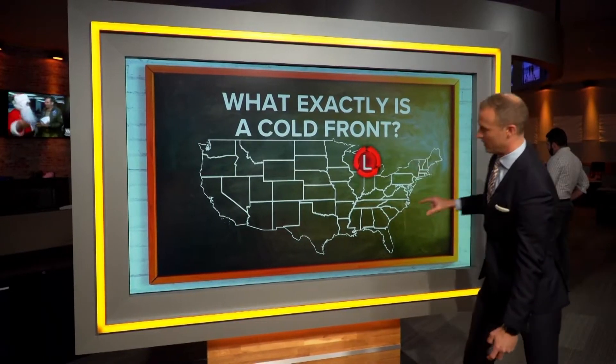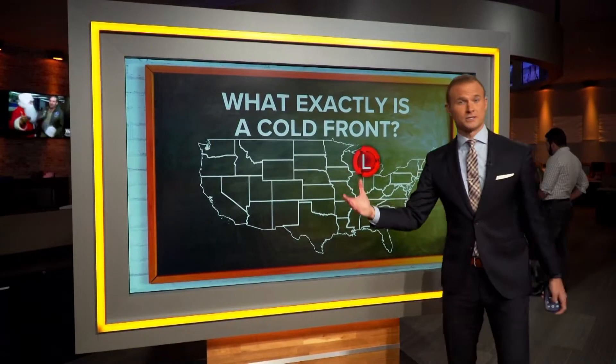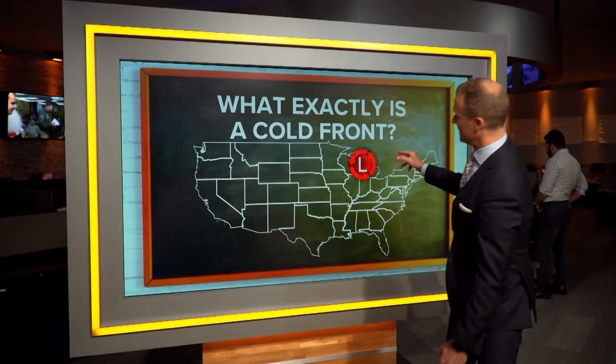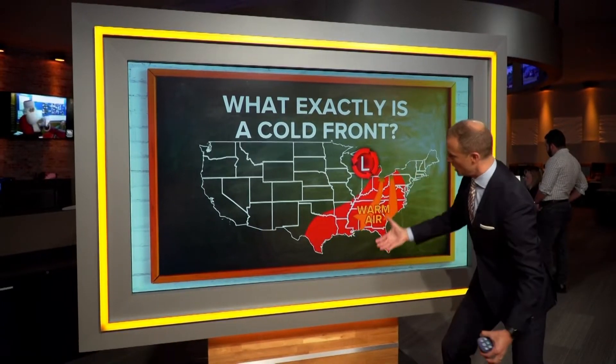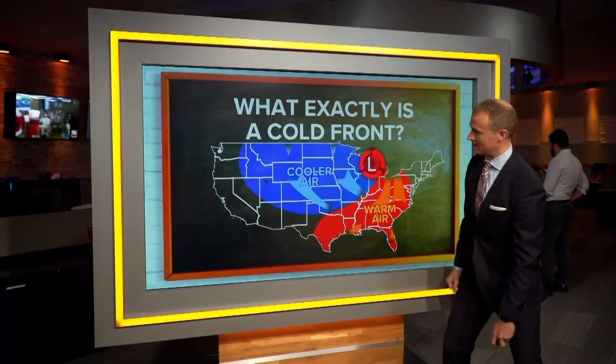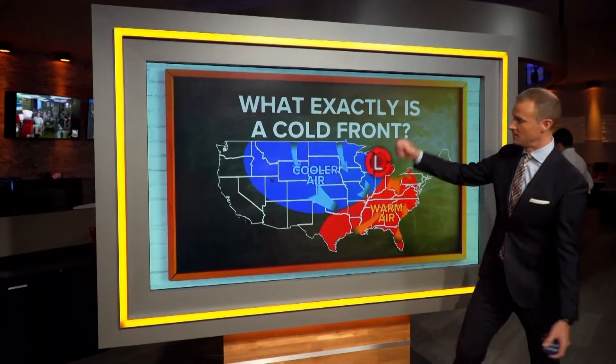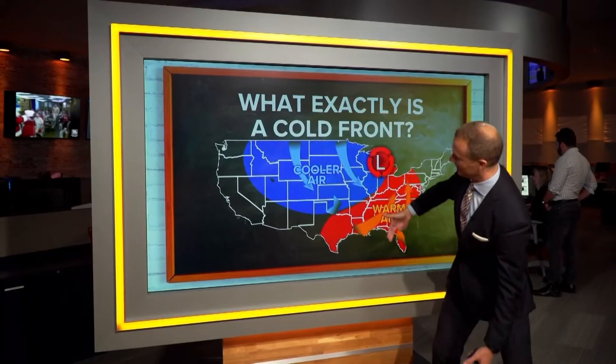You've got a low pressure system. Low pressure systems in the northern hemisphere spin counterclockwise. And as a result, that low pressure system draws up warmer air on the eastern side of the low. Conversely, on the western side of that low pressure system, colder air funnels in behind it.